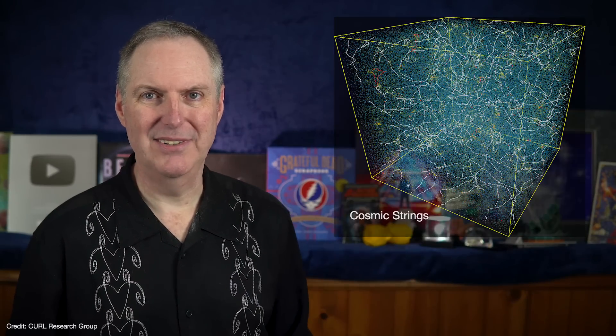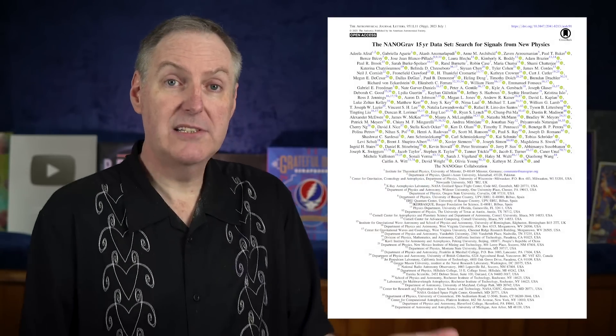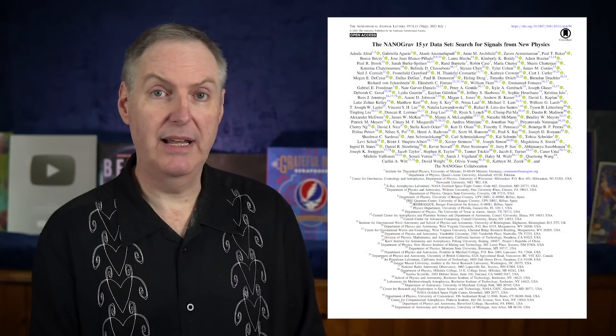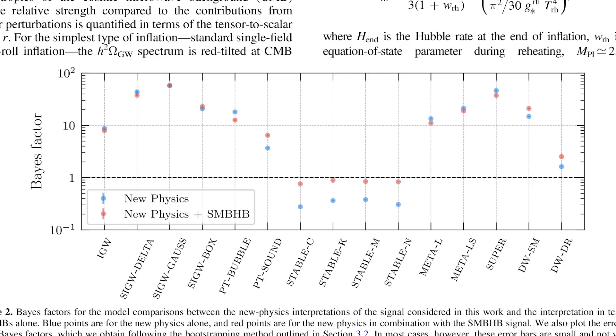These are exciting possibilities, but they're also very speculative. Still, the nanograv team investigated whether it's possible that new physics might be playing a role here. This is a table of comparisons to the hypothesis that the signals are coming from a combination of supermassive black hole binaries and a form of new physics. Those points are shown in red. And the hypothesis that the signals were coming from new physics alone, shown in blue.